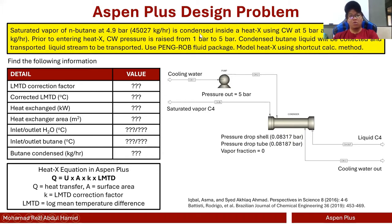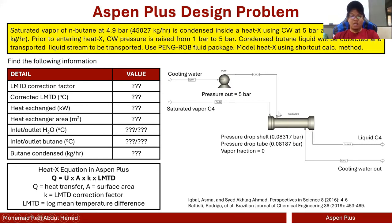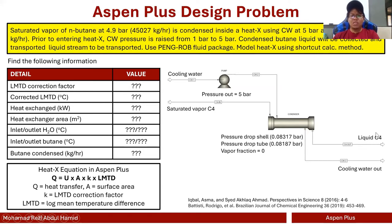For our design problem today, we're going to focus on the condensation of n-butane. We have n-butane coming in as a saturated vapor at 4.9 bar, with a flow rate of 45,027 kg/hr. It will be condensed using cooling water coming in at one bar, which will be raised to five bar before entering the heat exchanger. What comes out will be slightly higher temperature cooling water as well as liquid butane. We're going to try to condense all of the incoming butane.